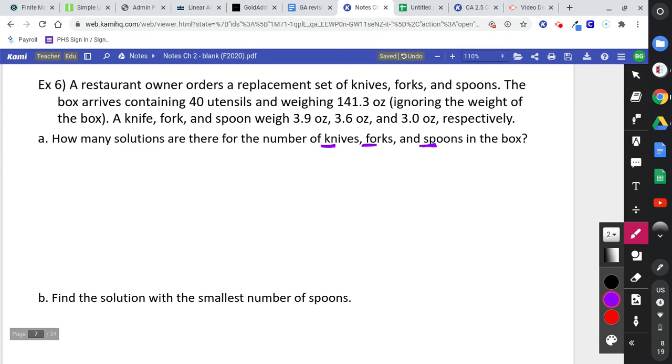I've got three variables in this problem. I'm going to use K, F, and S for knives, forks, and spoons. So if you go back and reread the problem with that in mind, that might help you come up with the equations. When I see this sentence right here, the box arrives containing 40 utensils, that tells me an equation. There are 40 items in that box, so K plus F plus S equals 40.